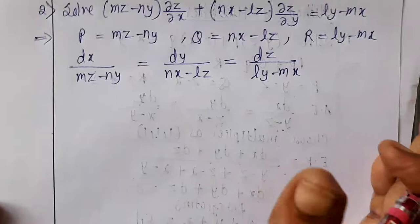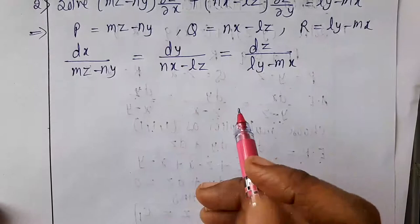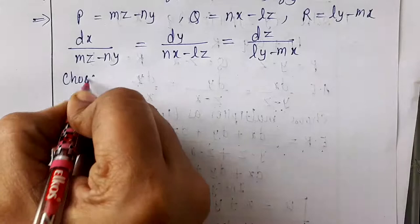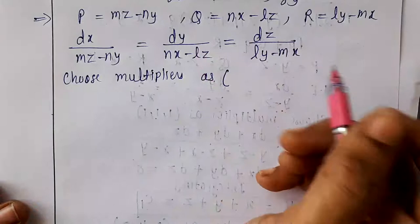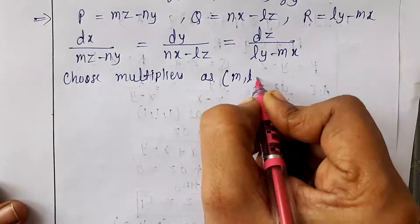Again, the terms are in addition and subtraction, so we cannot use the grouping method — we cannot neglect any variable. So we must choose multipliers. Whenever l, m, n terms appear in a problem, always choose the first set of multipliers as l, m, n.